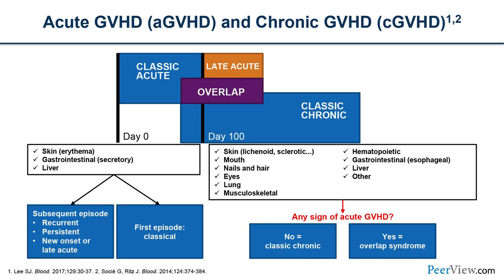Sometimes patients have graft-versus-host disease that occurs a little bit later — this can be called late acute graft-versus-host disease. And sometimes acute graft-versus-host disease starts and then you begin to see chronic symptoms, which we call an overlap syndrome. Classic chronic graft-versus-host disease happens in the later months after a transplant, and it is much more wide-reaching than just three organs — many organs throughout the body can be affected.